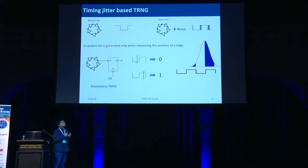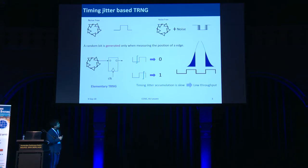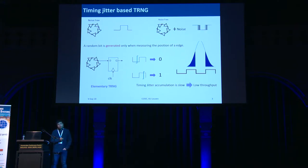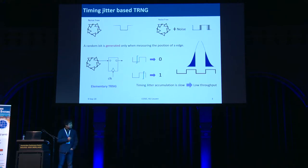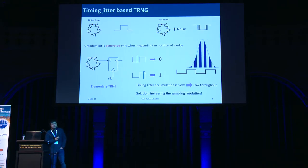In the best-case scenario, the rising edge of the sampling signal aligns with the rising edge of the free-running oscillator signal, giving equal probability of zero and one. But when designing a TRNG, we cannot rely on the best-case scenario — we must rely on the worst case. Timing jitter, the Gaussian white noise we want, accumulates very slowly in a free-running oscillator, resulting in very low throughput. There are many techniques to improve throughput: one is to implement many free-running oscillators together (a multiple ring oscillator TRNG), another is coherent sampling. Our solution is to increase the sampling resolution.